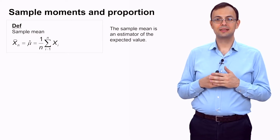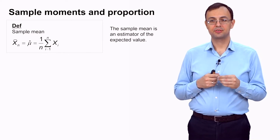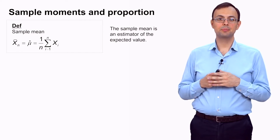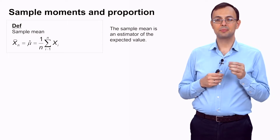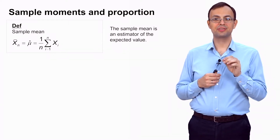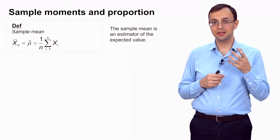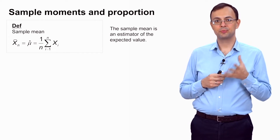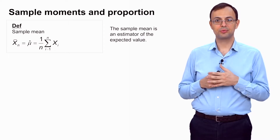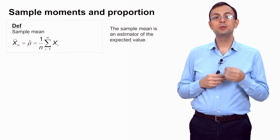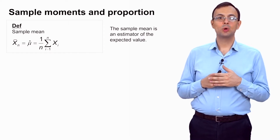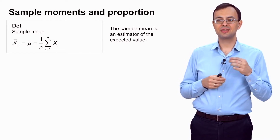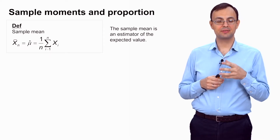The first one is the sample mean. The standard notation for the sample mean is x-bar, sometimes x-bar sub n, where the index n shows the sample size, or just x-bar without n if the sample size is not important. Sometimes mu-hat is also used, because mu is a standard symbol for the expected value and the sample mean is an estimator of the expected value.